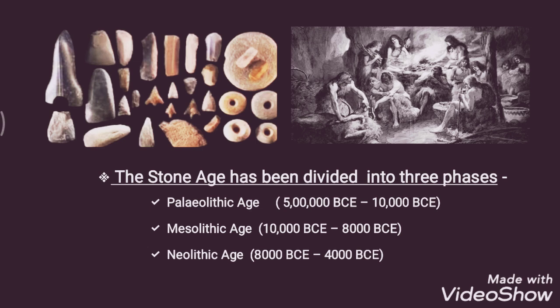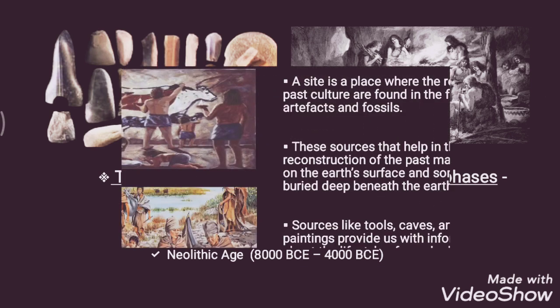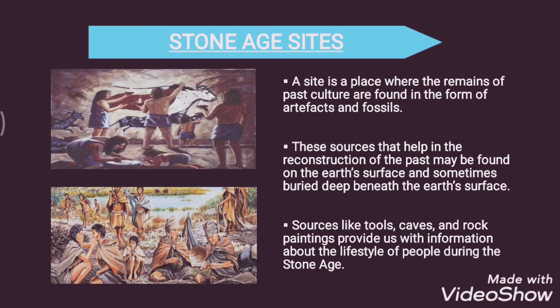When we talk about the Stone Age, let's first discuss the different Stone Age sites. A site is a place where the remains of past culture are found in the form of artifacts and fossils. It is basically a location from where historians and archaeologists get evidence in the form of artifacts and fossils.